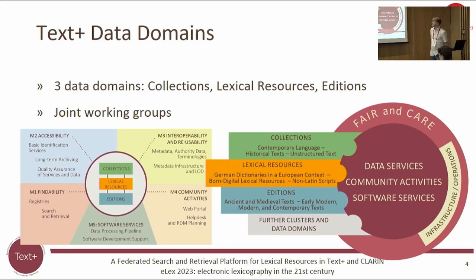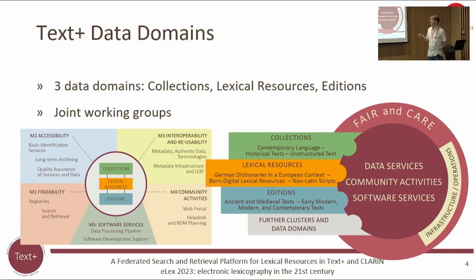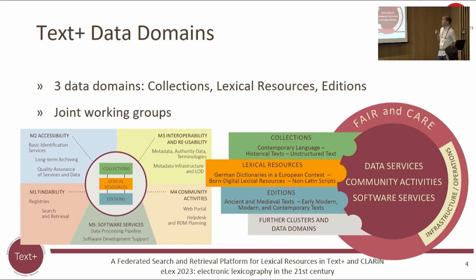Text+ is split into three data domains: collections, lexical resources — where I am part of — and editions. They have different foci but all data domains share common measures like findability, accessibility, and community activities, with joint working groups. For this presentation, measure 1, findability, is particularly important.